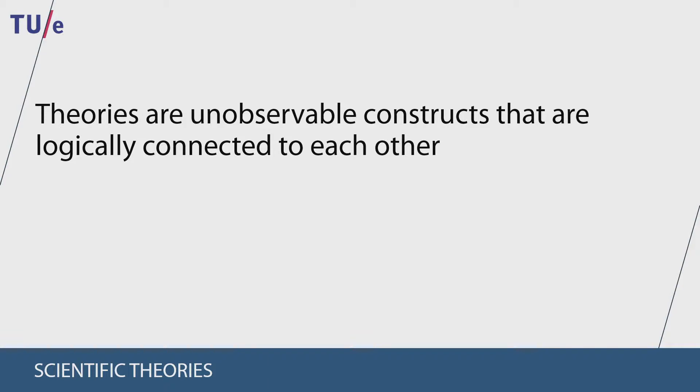These days social psychologists believe that there are multiple ways through which we can understand why humans behave the way they do, and there are multiple ways to develop new scientific theories of human behavior. These theories are composed of unobservable constructs that are logically connected in a certain way and they can provide answers to why people do what they do.